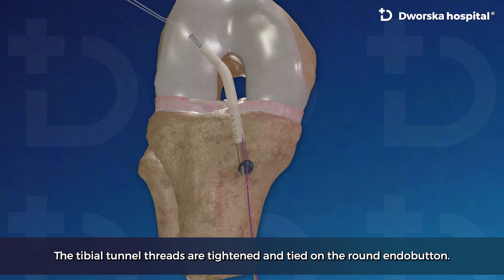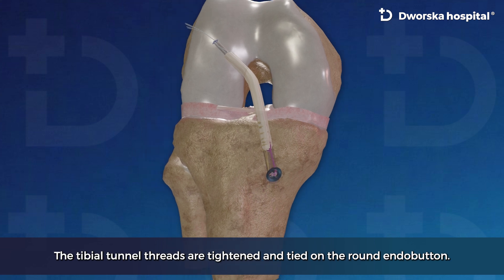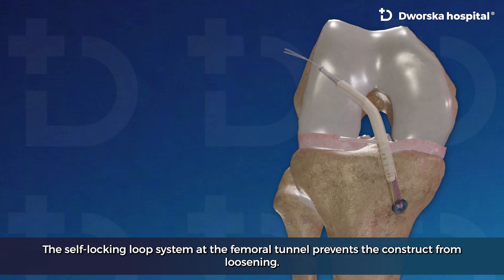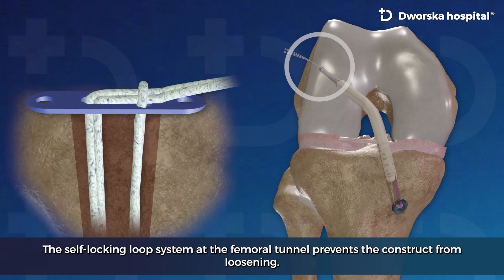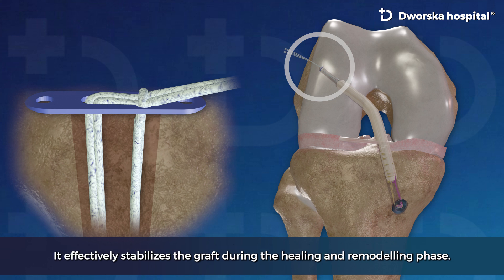The tibial tunnel threads are tightened and tied on the round endo button. The self-locking loop system at the femoral tunnel prevents the construct from loosening. It effectively stabilizes the graft during the healing and remodeling phase.